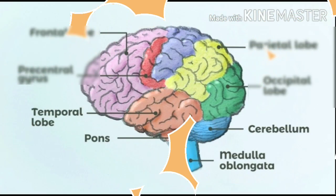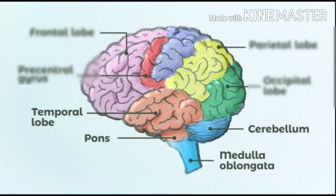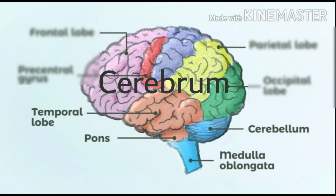Let us study about the structure and function of the brain. All of you, look at the picture. Which part is the largest one? Cerebrum is the largest part of the brain. Numerous fissures and folds are seen. The grey outer part is called the cortex, and the inner part is called medulla.